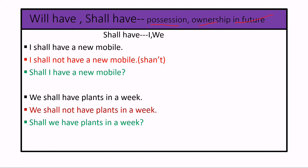In this video, we will cover will have and shall have. Will and shall are helping verbs used to form affirmative, interrogative, and negative sentences. To do, does, and did are also helping verbs used similarly.